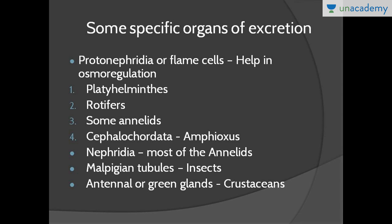Just for MCQ purposes, let's look at some specific organs of excretion — you will read these in detail in the chapter on biological diversity and the animal kingdom. The first specific organ of excretion is the flame cell, or protonephridia, which is an organ of osmoregulation — it maintains the fluid and ion balance of the body. Flame cells are present in platyhelminths (flatworms), rotifers, some annelids, and cephalochordates, for example Amphioxus.